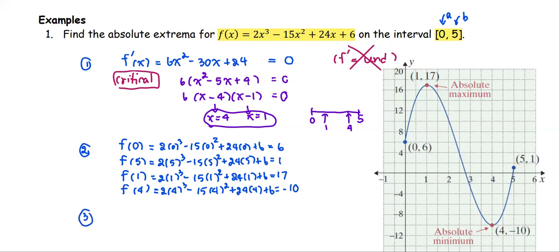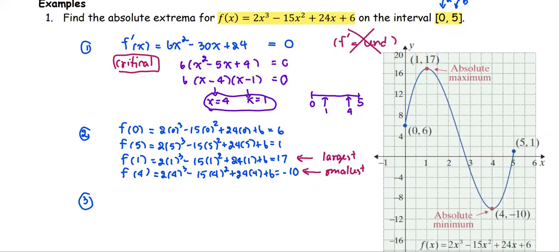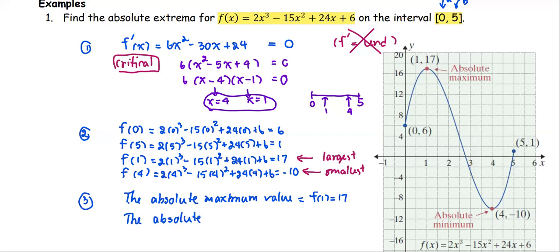The last step: take the largest value — which is 17 — as the absolute maximum, and the smallest value as the absolute minimum. The absolute maximum value is 17, which is f(1). The absolute minimum value is −10, which is f(4).